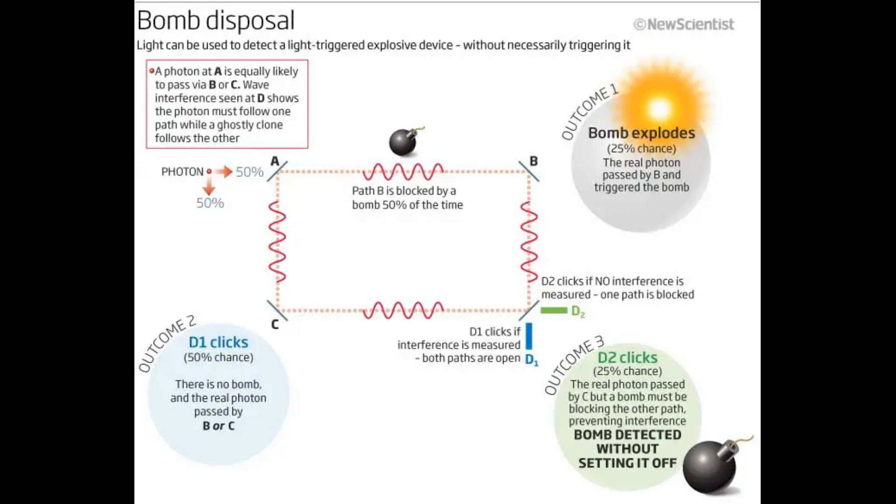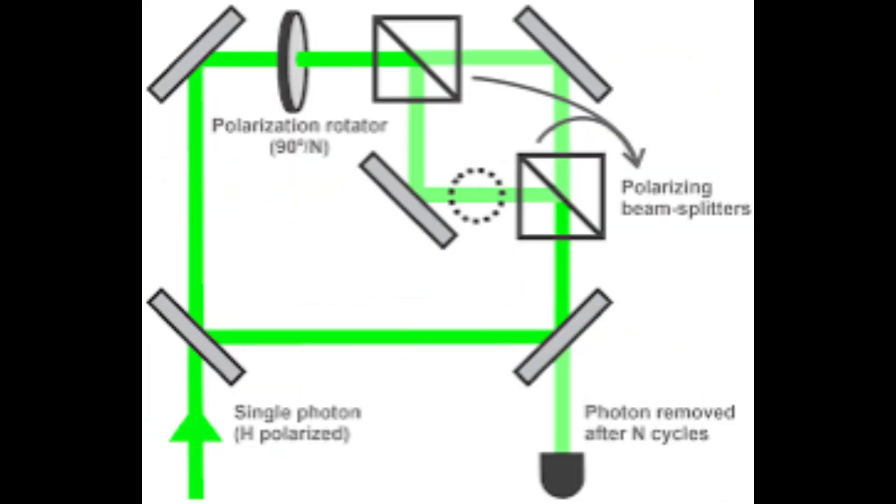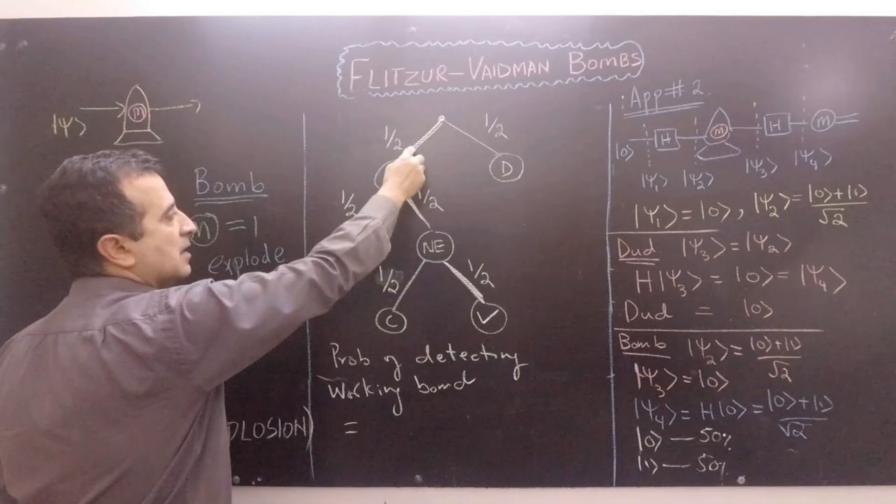The Elitzur-Vaidman problem illustrates a fundamental property of quantum mechanics, the principle of superposition. In the setup, when a photon encounters a half-silvered mirror, a path is split into superpositions. Classically, we can think of the photon either passing through or being reflected, each with a 50% probability. However, in quantum mechanics, the photon does both until a measurement breaks the superposition.